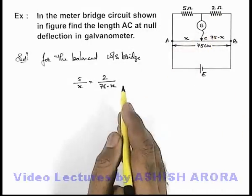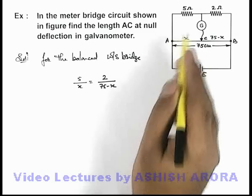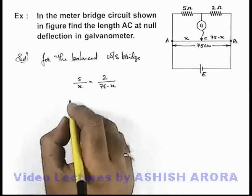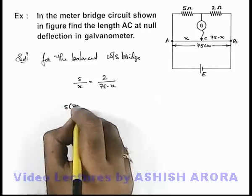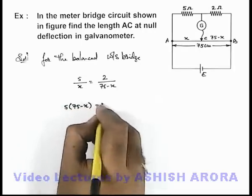Now on solving, we are getting 5 into 75 minus x is equal to 2x.